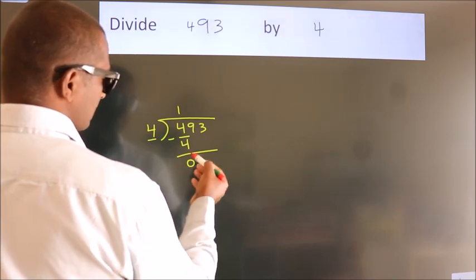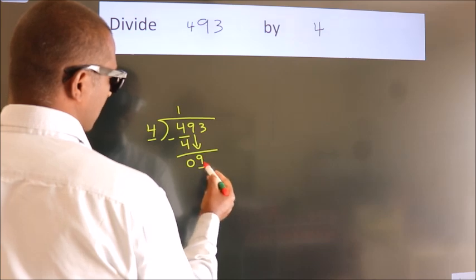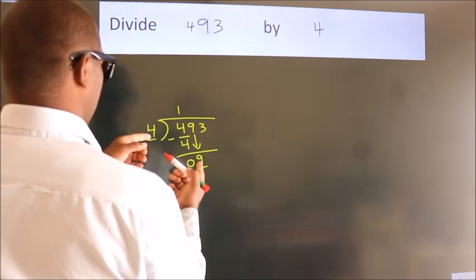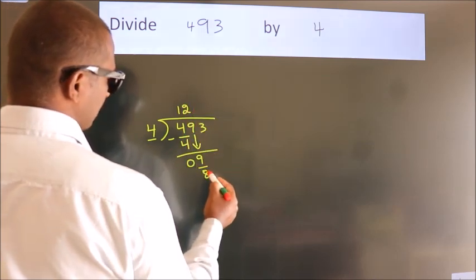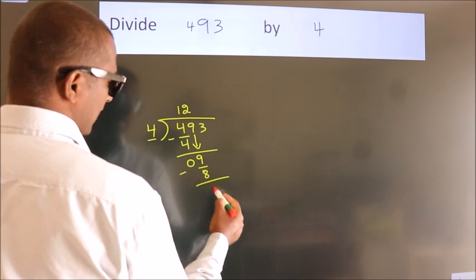After this, bring down the beside number. So, 9 down. A number close to 9 in 4 table is 4, 2's, 8. Now, we subtract, we get 1.